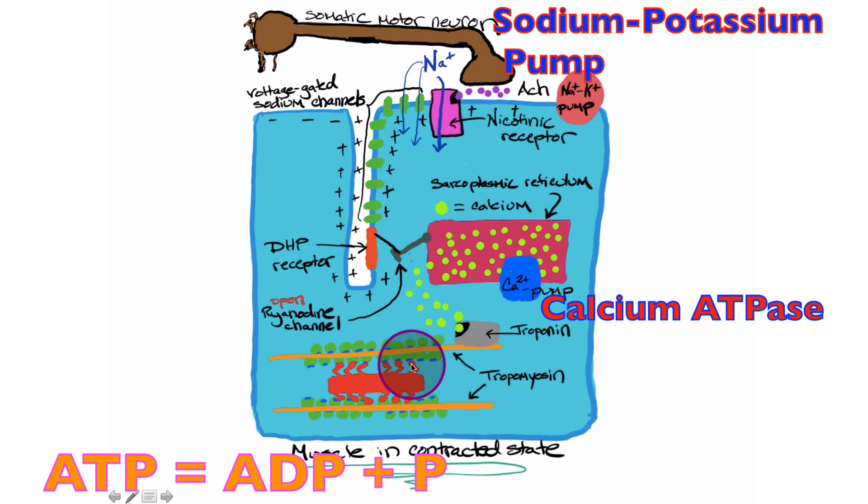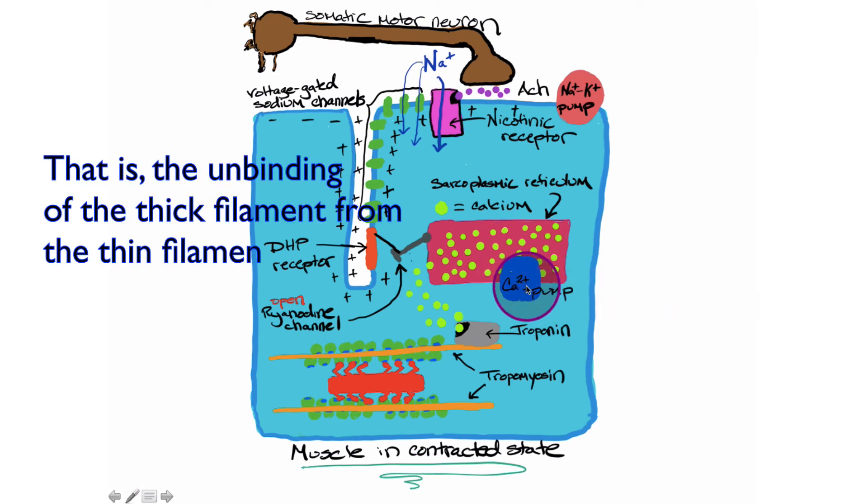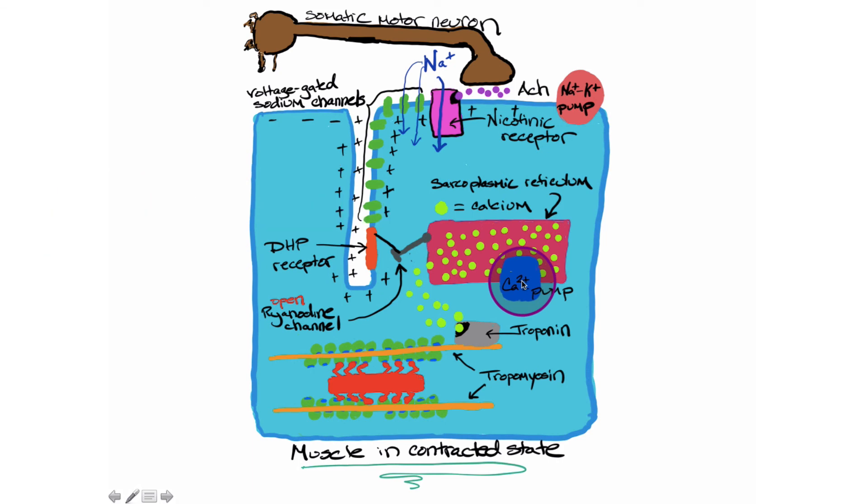We need ATP for the activity and relaxation of the myofilaments. We need ATP as the chemical energy to drive this calcium pump, and we also need ATP as the energy source for the sodium-potassium pump.